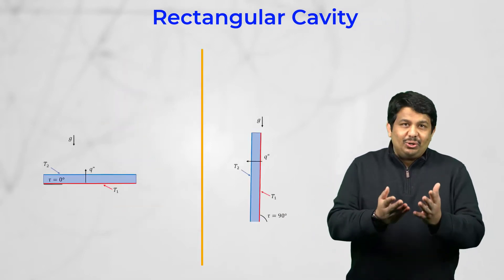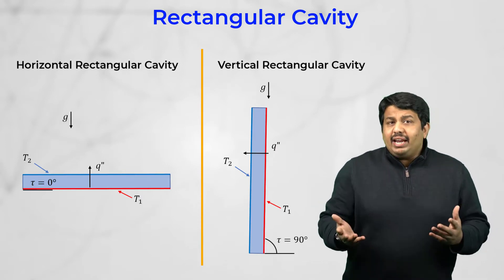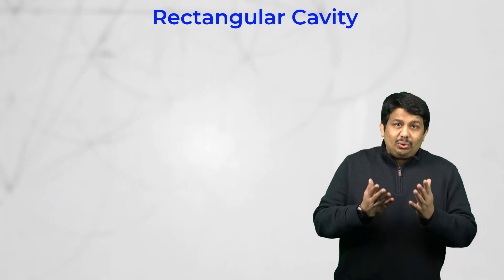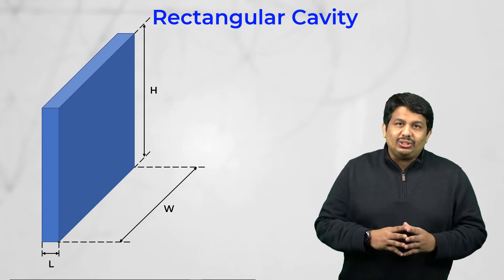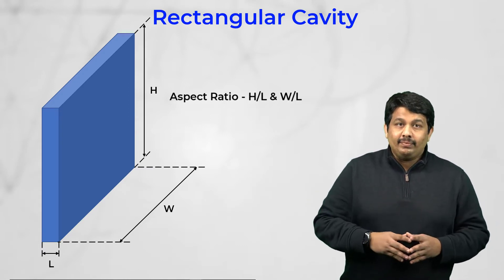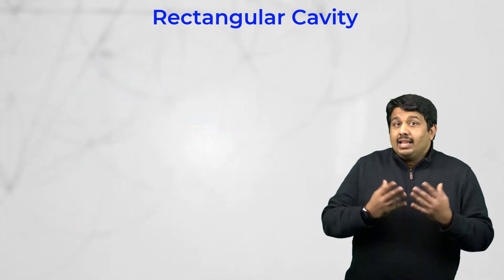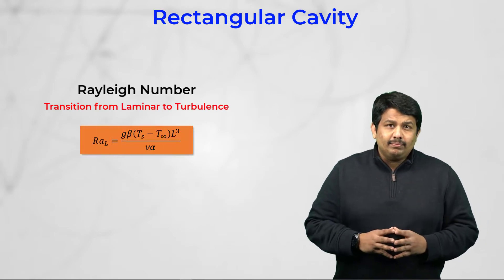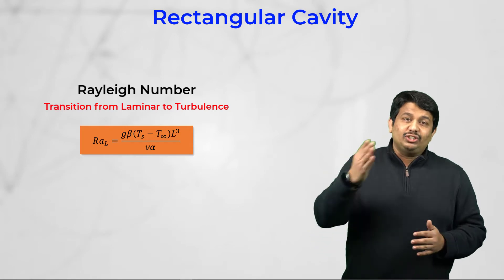The heat transfer due to natural convection in a horizontal cavity is very different from the vertical cavity. In addition to the tilt angle, the overall heat flux in these enclosures also depends on the aspect ratio of the cavity, H over L and W over L. The fluid flow behavior is a strong function of the Rayleigh number, the non-dimensional number which dictates when a flow transitions to turbulence.